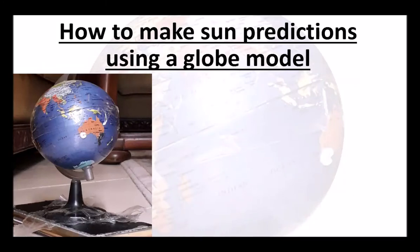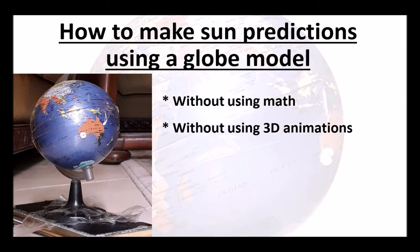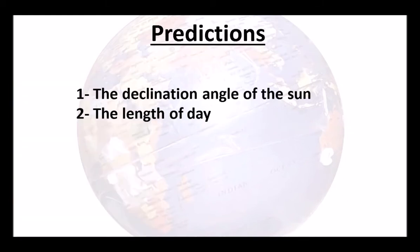How to make some predictions using a globe model without using math or 3D animations. What I'm going to predict using my globe model is first the declination angle of the Sun, and second, based on the declination angle of the Sun, the length of day.